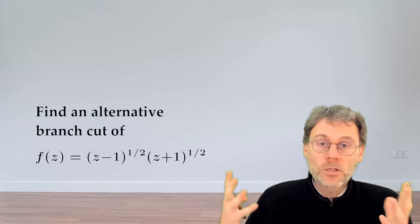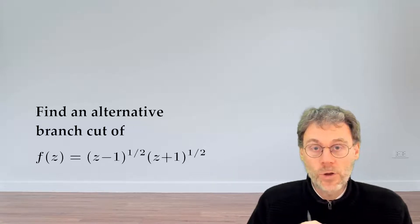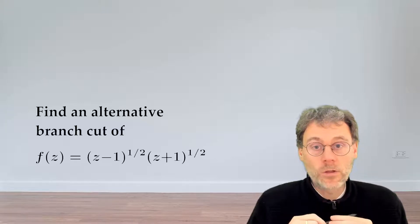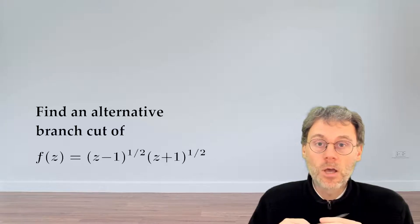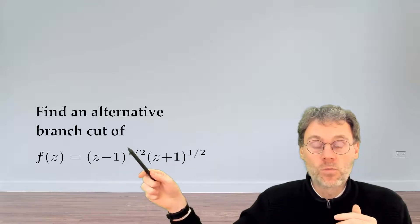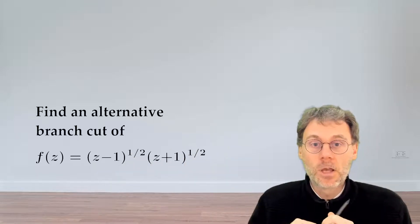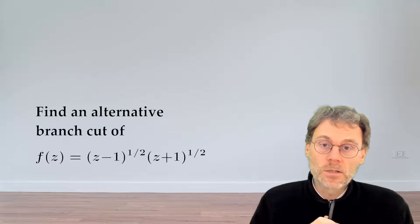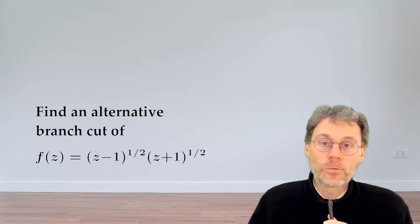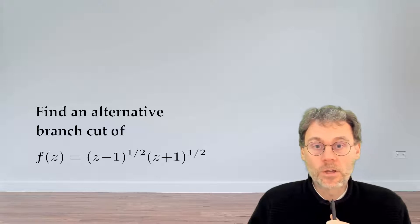The question is: can you change something about your conventions of branch cuts, such that for the whole function you end up, for example, with a branch cut going from minus infinity to minus 1, and then from 1 to plus infinity? We want to see what you need to change in the derivation of the previous exercise to end up with that alternative choice of branch cut.